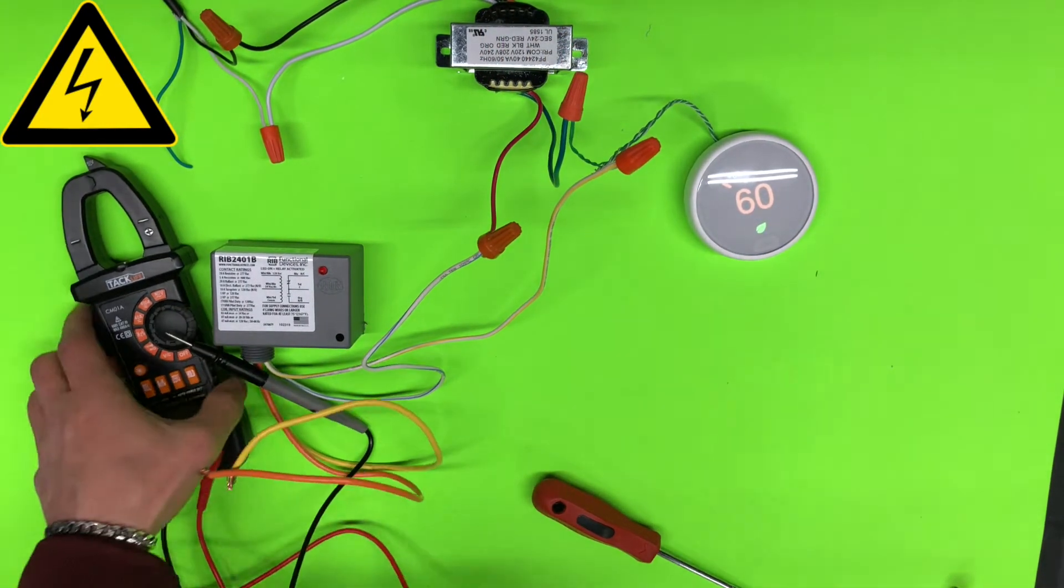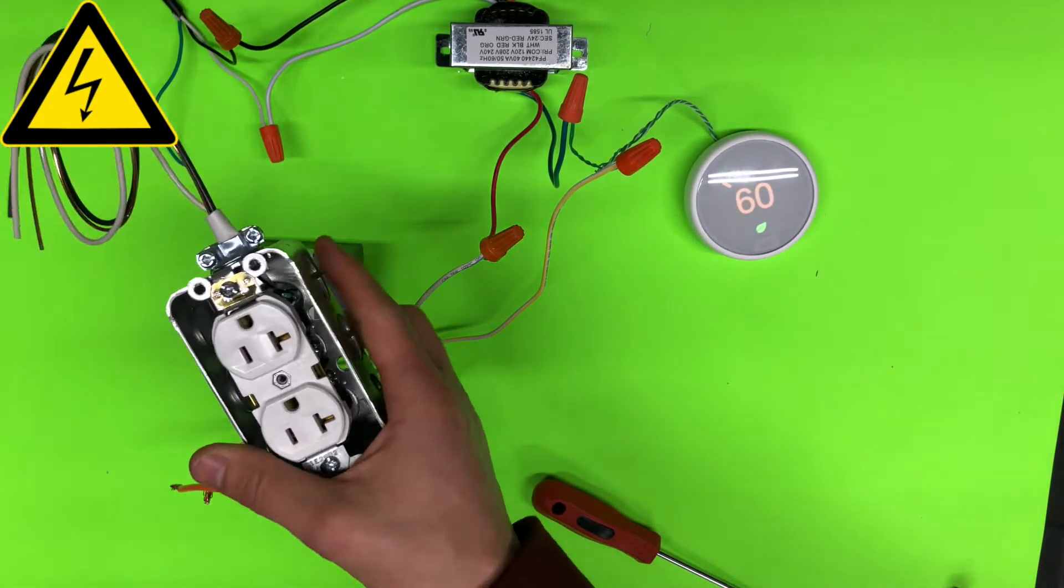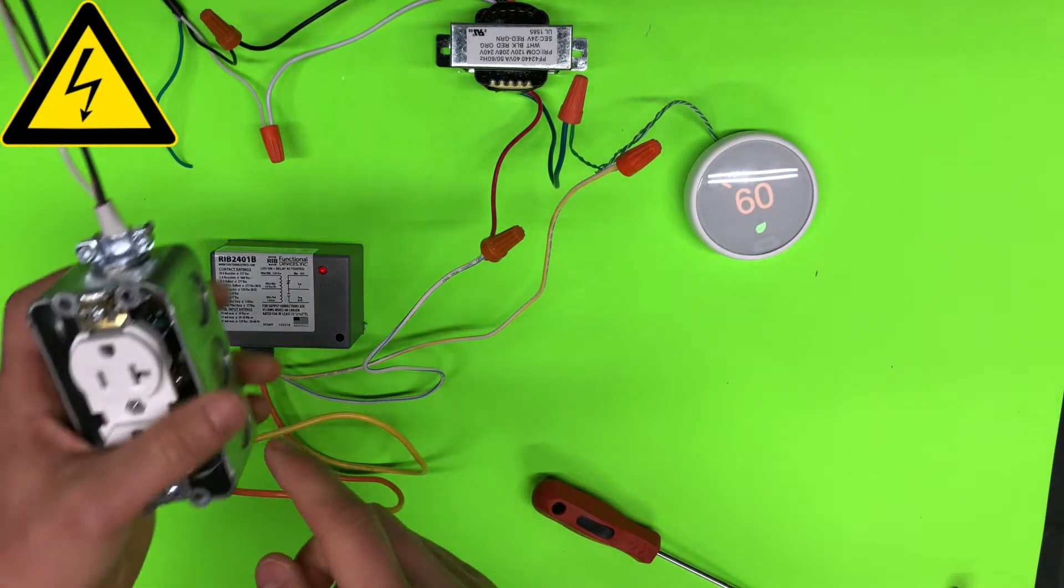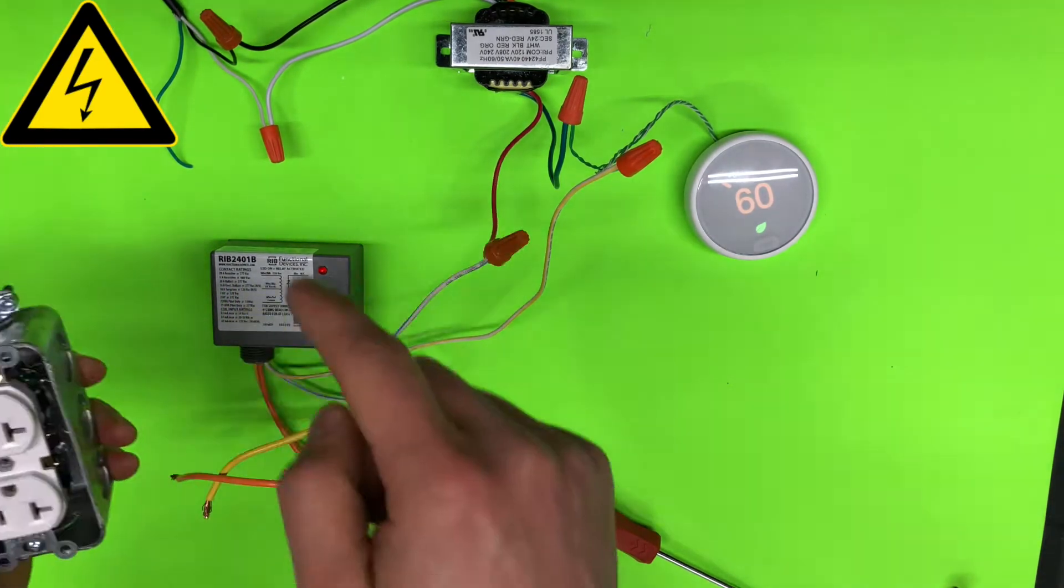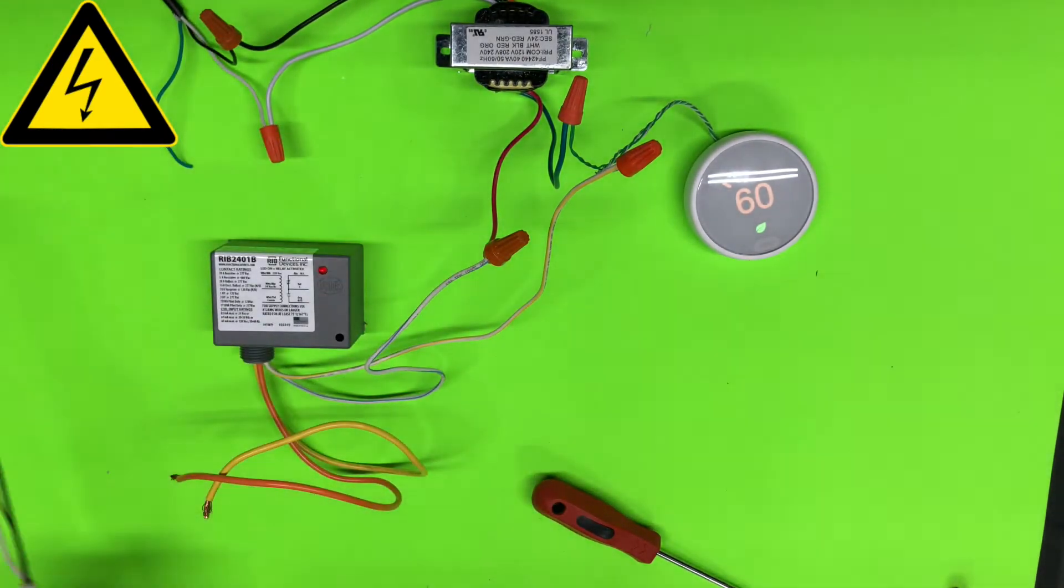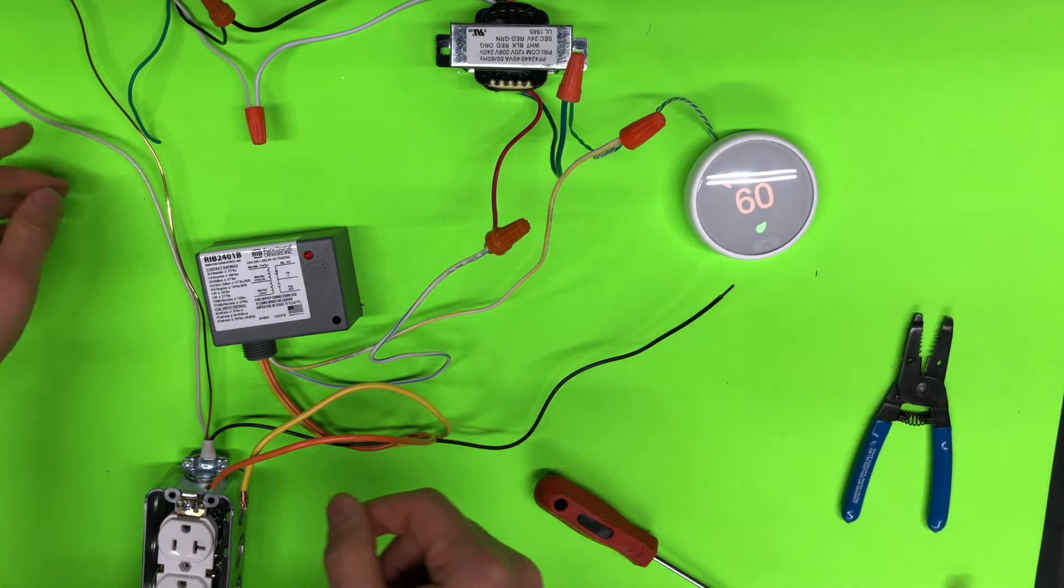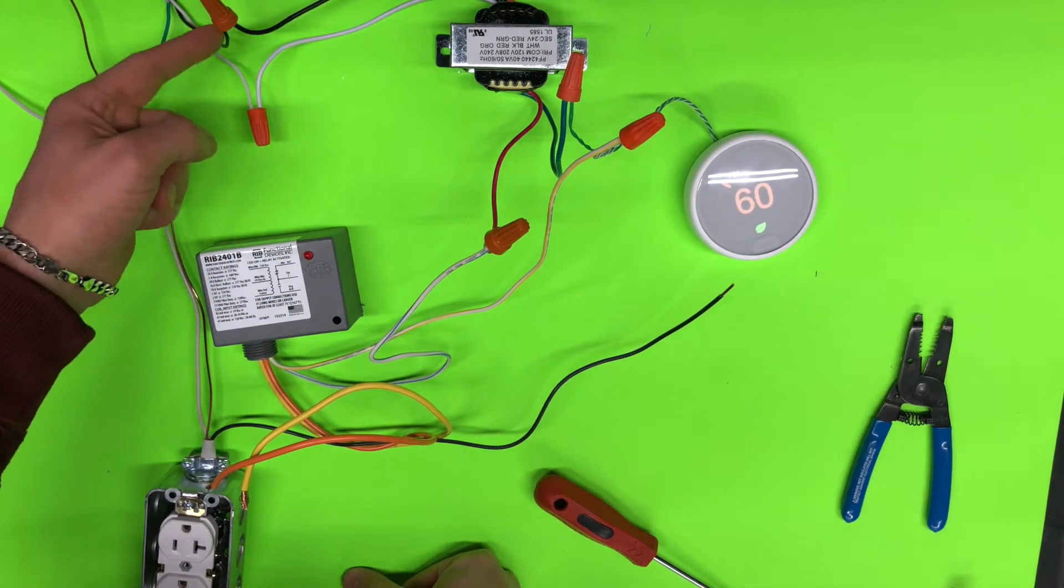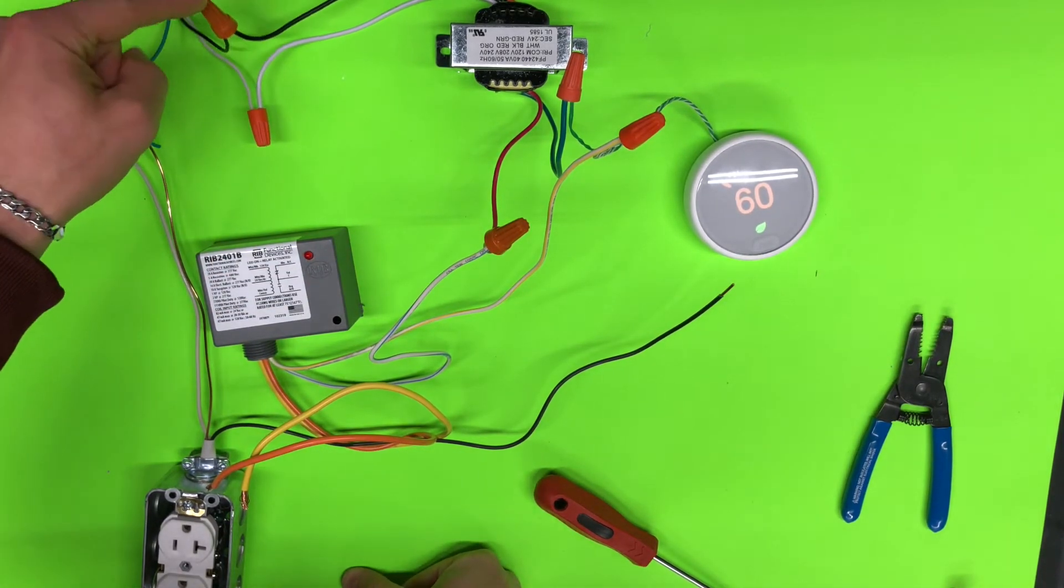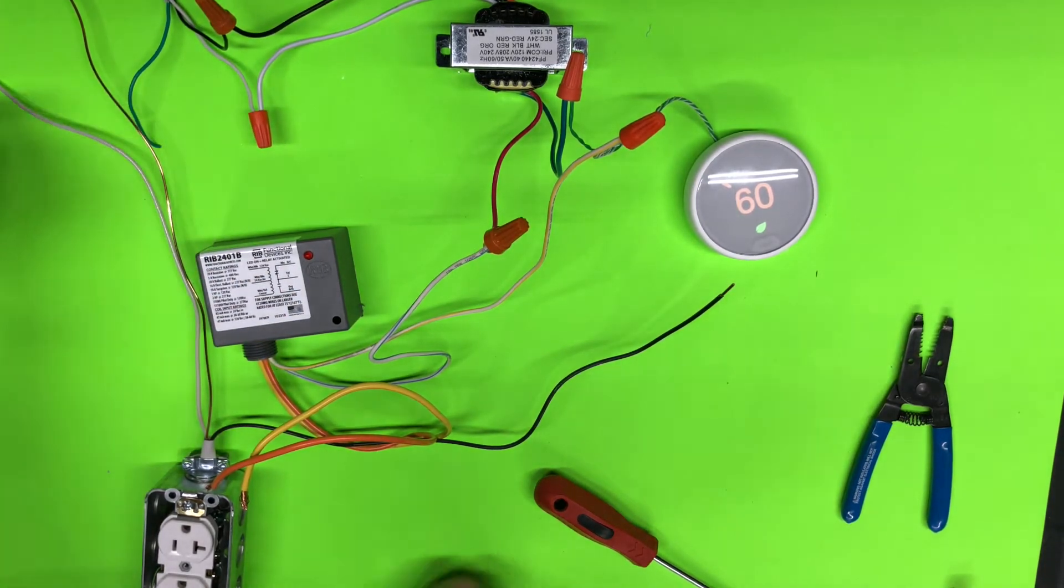So next step is the last step. What we need to do, I have this dummy load. So now we need to connect this through our relay. Let me turn off input and the way how I'm going to connect this is hot wire is going to be sent through relay and neutral is going to be connected to my load.